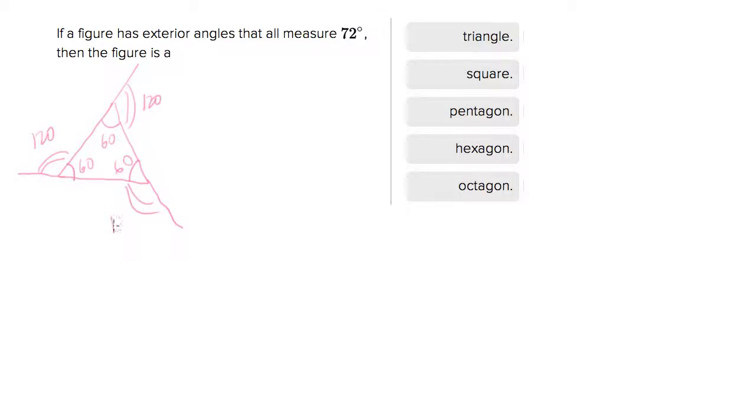So if this question had said a figure has exterior angles that all measure 120, then the figure is A, and the answer would be triangle. Right? We know that's a regular shape here because all the angles have the same measure. So what we have to do is just go through our set of, we've tried triangle, that's not it. We just need to keep going through the list and seeing what it is.